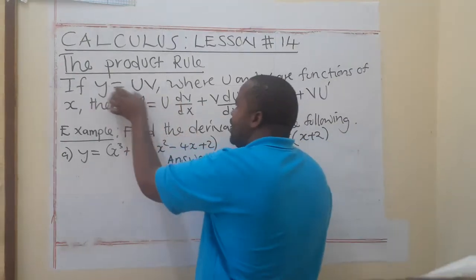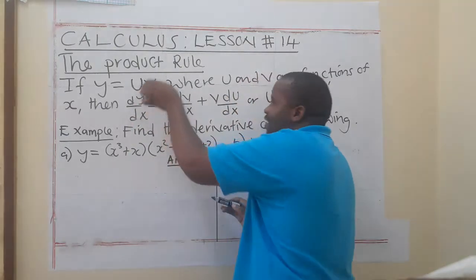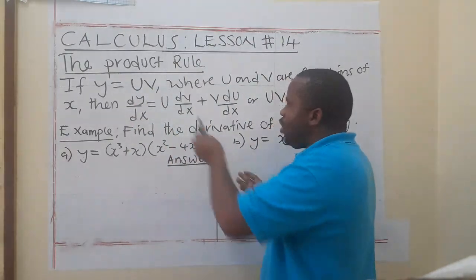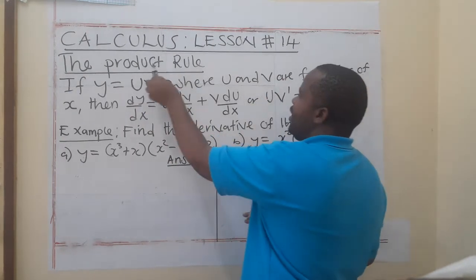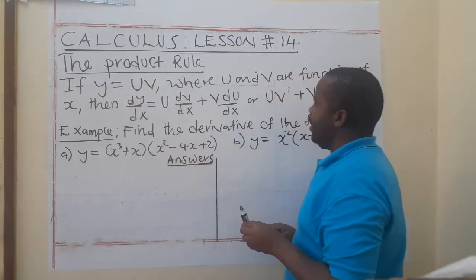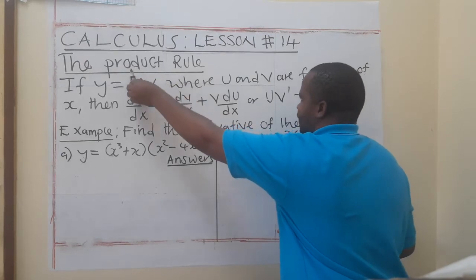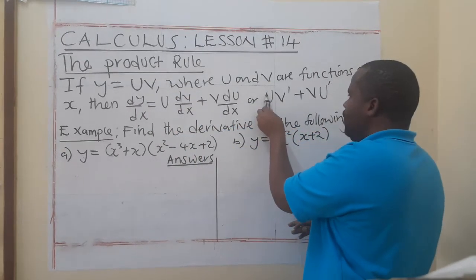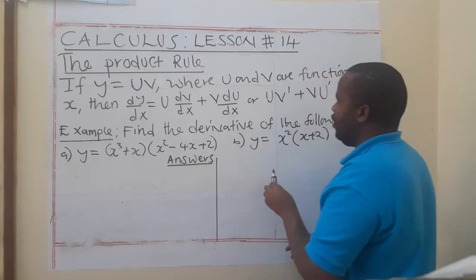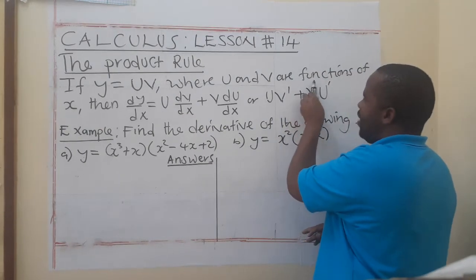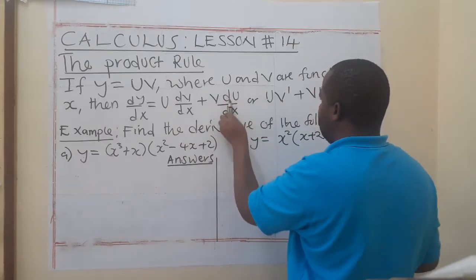What I'm saying is, if you have y = u times v, where u is a function and v is a function, you are going to keep function u and find the derivative of v and multiply. Then you say plus, keep function v and find the derivative of u. So we are saying: u multiplied by v-prime, where v-prime is the derivative dv/dx, plus v multiplied by du/dx.